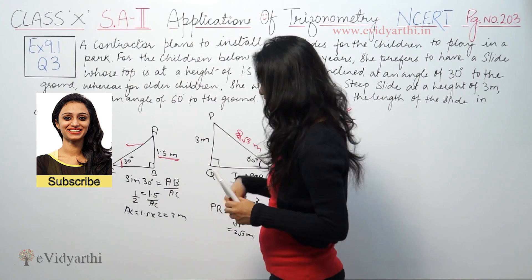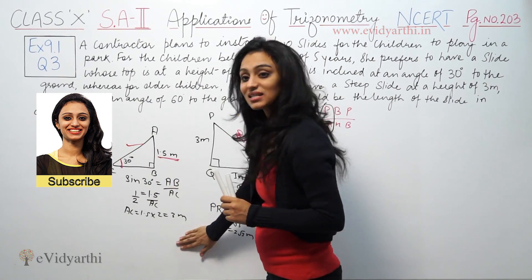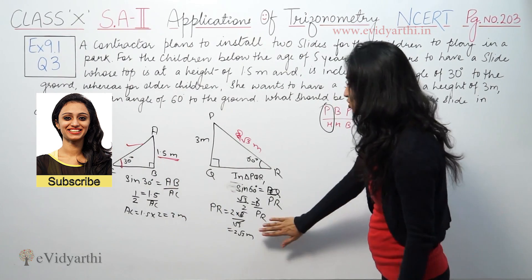So in two cases, the slide length in one case is 3 meters, and in the second case the slide length is 2 root 3 meters.